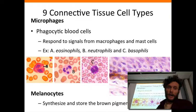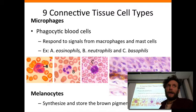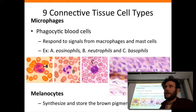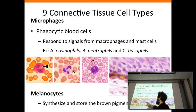Microphages — phagocytic blood cells, much like the macrophage but distinct in their size. They are activated by either heparin or histamine and often can extravasate from the blood if need be. Examples of these are the granular leukocytes: eosinophils, neutrophils — also called polymorphonuclear leukocytes — and basophils. Basophils are very rare; something like 0.05% of leukocytes are basophils.